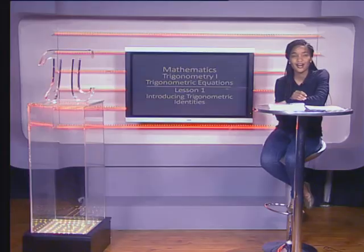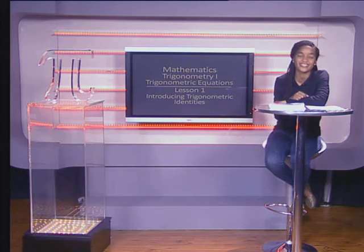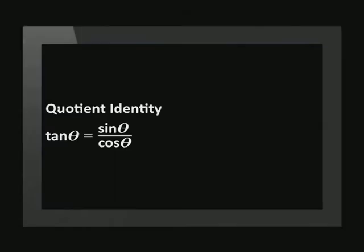This identity is always true for any value of theta. We can now use this identity to help us simplify expressions and equations, and help us prove other identities. Our next identity is tan theta equals sin theta over cos theta, which is known as the quotient identity. This identity can also be proved using the unit circle.